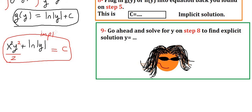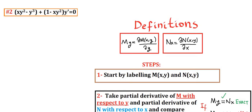If you would like to solve the explicit solution, then you need to solve for y in this equation. Now let's solve question number 2 using the 9 steps.